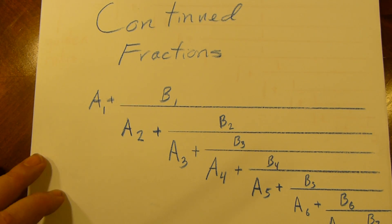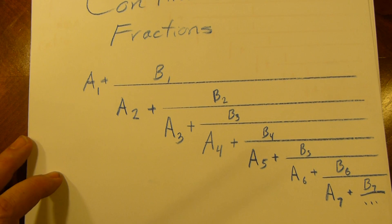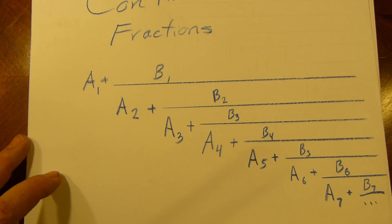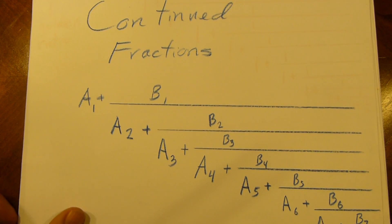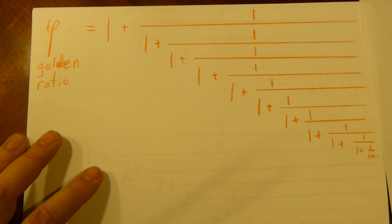So what's a continued fraction? It's just a fraction of a fraction of a fraction of a fraction, and so forth. It's really all it is. I prefer the term nested fraction. Let's take a look at an example.